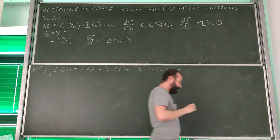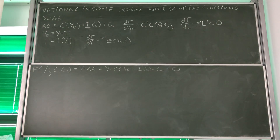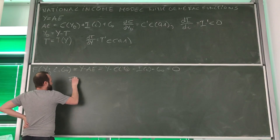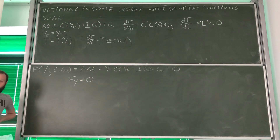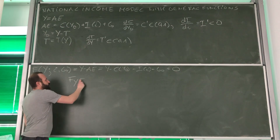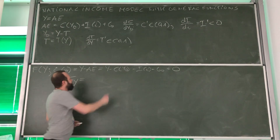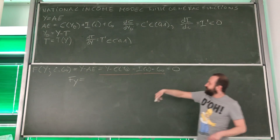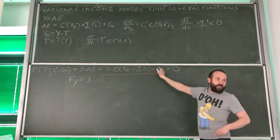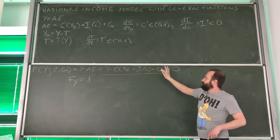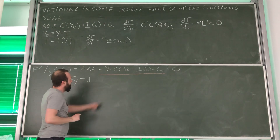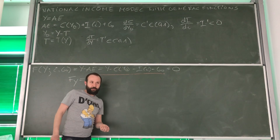When can we use the implicit function rule? Does this function imply a function of the equilibrium level of income? We need F_Y to be nonzero. So the first thing we need to do is calculate F_Y — that means differentiating this equation with respect to Y. The first component, the derivative of Y with respect to Y, is simply 1. For G₀ and I, there is no income involved, so the only remaining issue is the derivative of the consumption term with respect to Y.